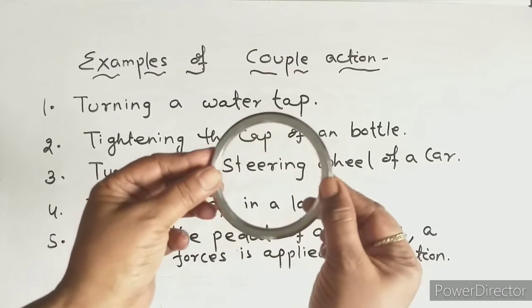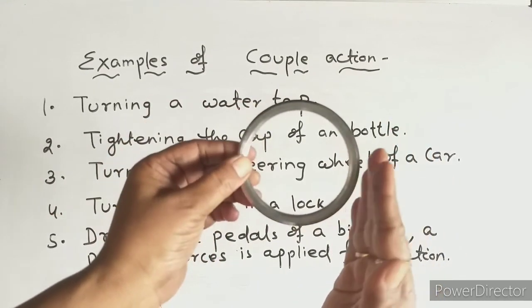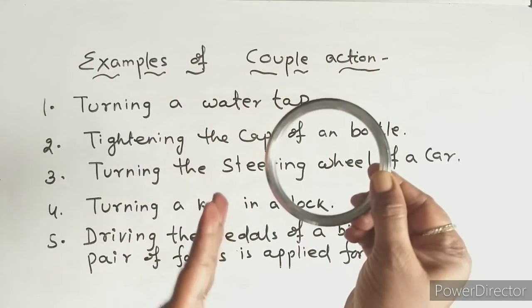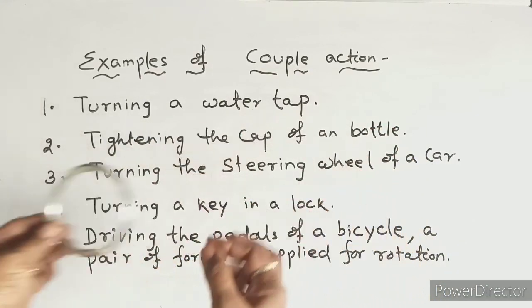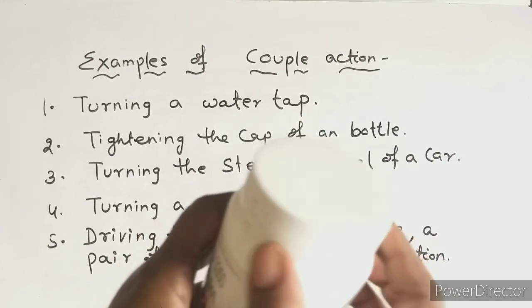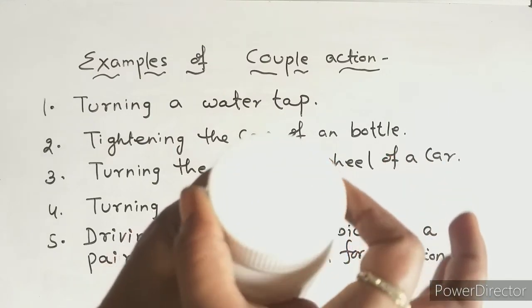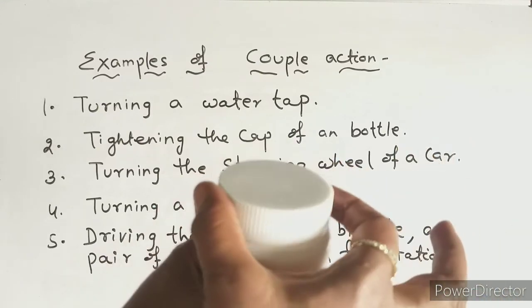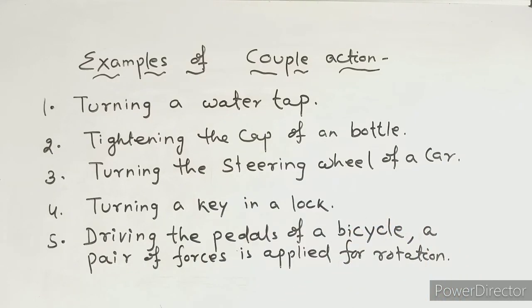This is the steering wheel. One force is applied in this direction and another force is applied in the opposite direction — two equal and opposite forces — so the body can rotate. Another example is opening a water bottle: to open it, two equal and opposite forces are applied on the body. I hope you understand this. Thank you for watching.